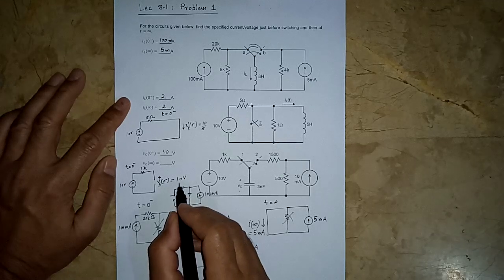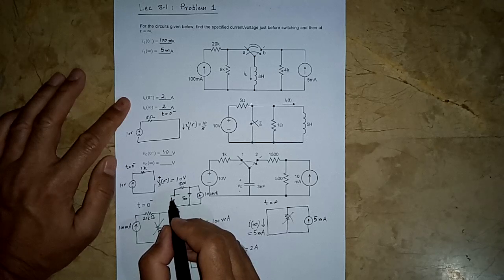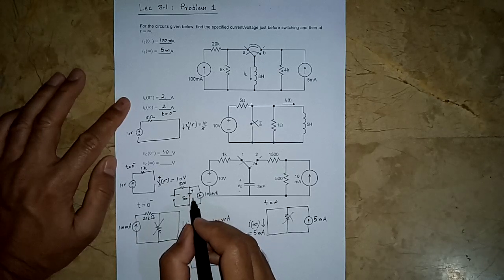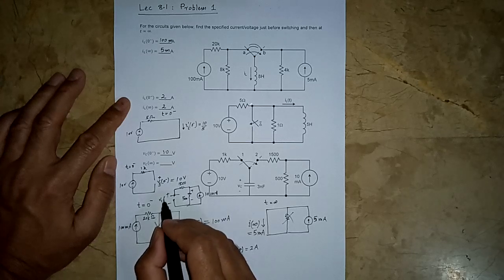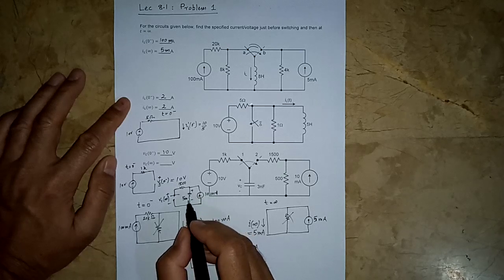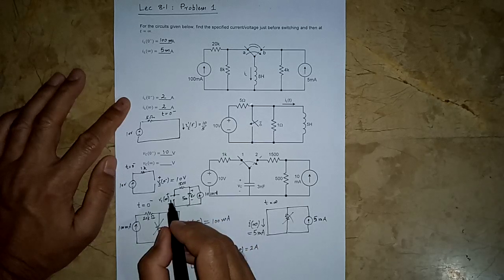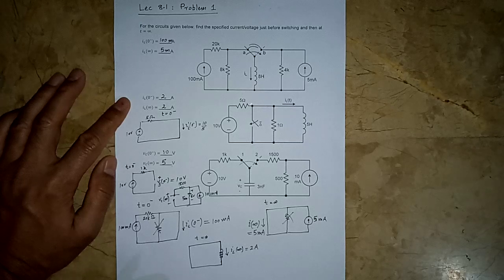At t equals infinity the capacitor again opens up. The 500 ohm resistor in series with the open capacitor carries no current, so it has no voltage drop. All 10 milliamperes flows through the remaining 0.5 kilohm resistor, giving a voltage of 5 volts. Therefore VC(∞) equals 5 volts.